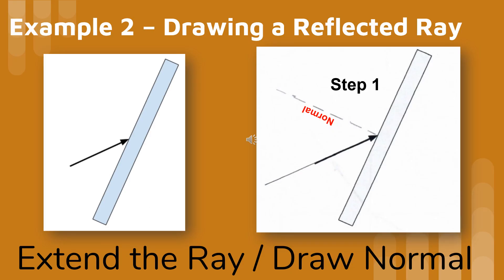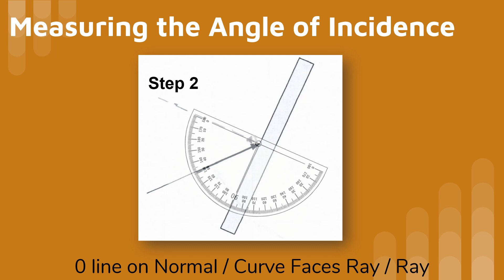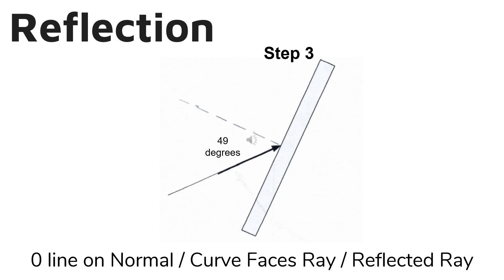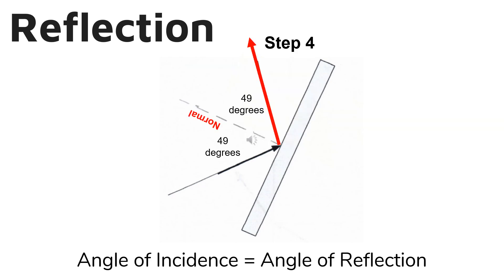Once again, we extend the length of the ray and draw a dotted line perpendicular to the reflecting surface. Point the curve of the protractor toward the ray, the zero line on the normal line, and the center of the protractor where the ray hits the reflecting surface. In order to draw the reflected ray, we flip the protractor to the other side. The angle of incidence equals the angle of reflection.